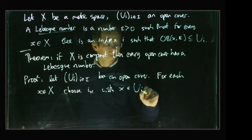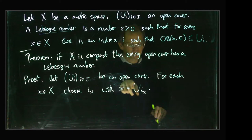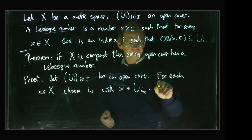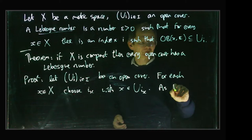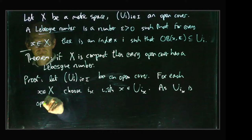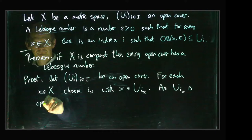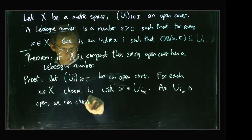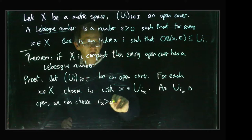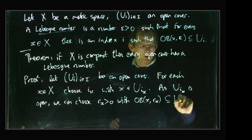Now this U set is open, and we're using the metric topology of course. So as Ui_x is open, we can choose some radius rx greater than zero with the corresponding open ball around x of radius rx contained within Ui_x.